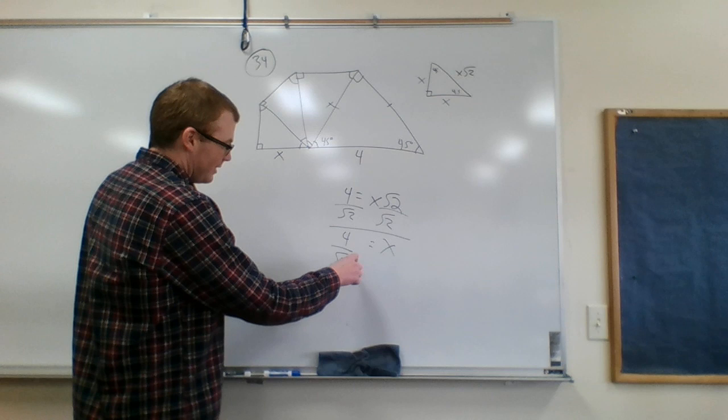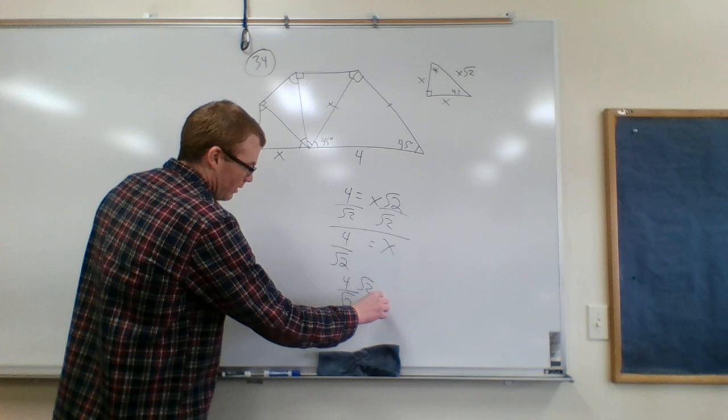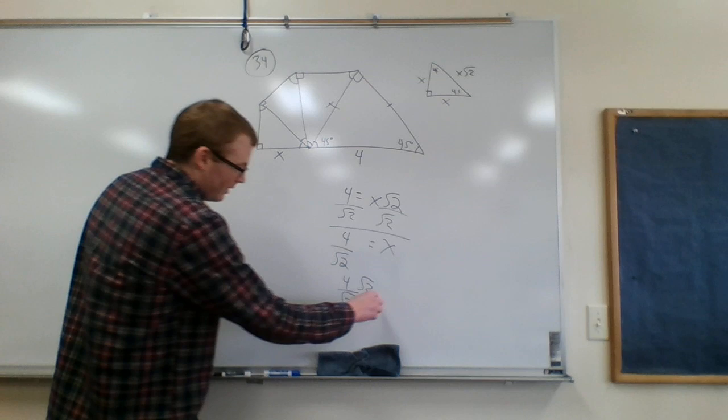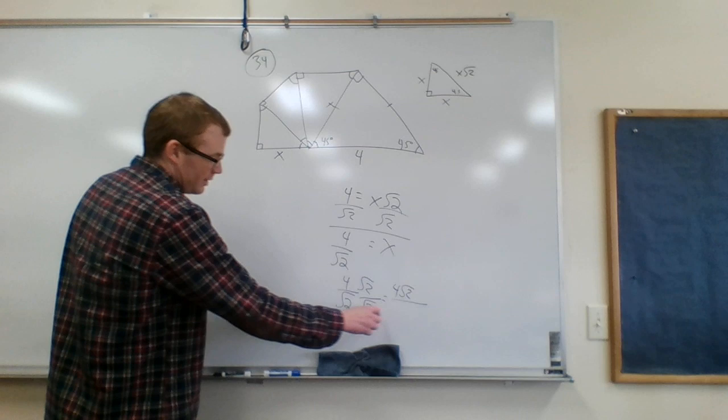Okay, but we don't want radicals in the denominator. So I'm gonna do times by square root of 2 over square root of 2. This is 4 square root of 2 over, this simplifies to 2.